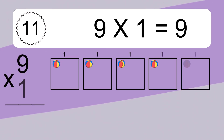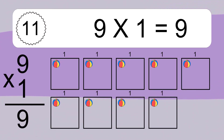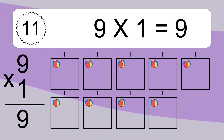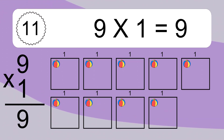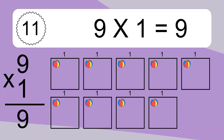9 times 1 equals 9. We have 9 boxes, and each box has 1 colorful ball inside. If you count all the balls in all the boxes together, you will have 9 times 1 balls. This equals 9 balls.